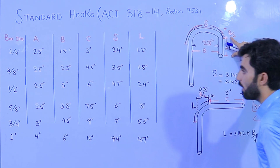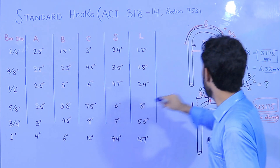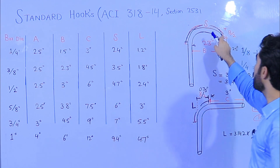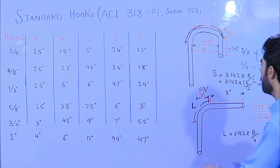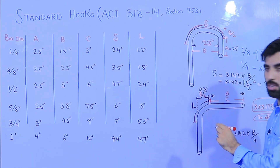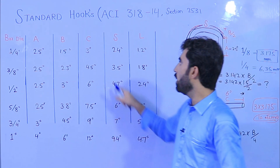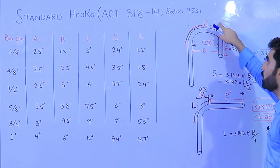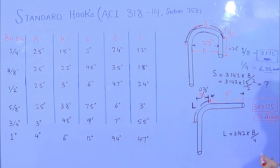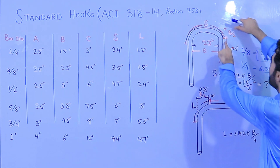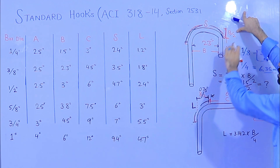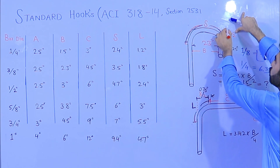For 1/2 inch (12 mm, No. 4) diameter steel bar: A should be 2.5 inches, B should be 3 inches, C should be 6 inches — remember, 6 inches for half-inch bar. S should be 4.7 inches. L should be 2.4 inches. You can get L by taking B divided by 2: 3 ÷ 2 = 1.5, which gives you this depth from here to here.